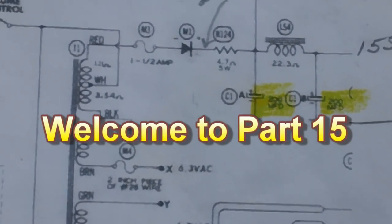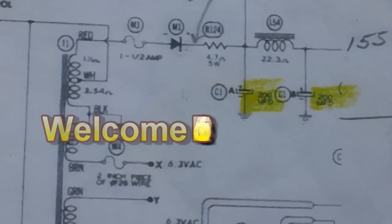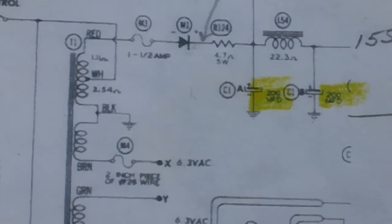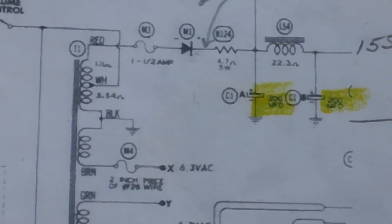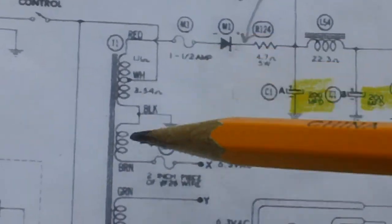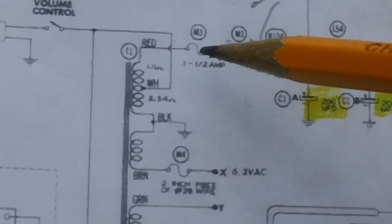Well welcome back. I have a good update report to give you on the old Halo Light. What was causing the filaments in all the tubes not to light? This power transformer coming off power transformer, we've got a one and a half amp fuse. You saw me change the fuse holder in that, but that was not the problem.